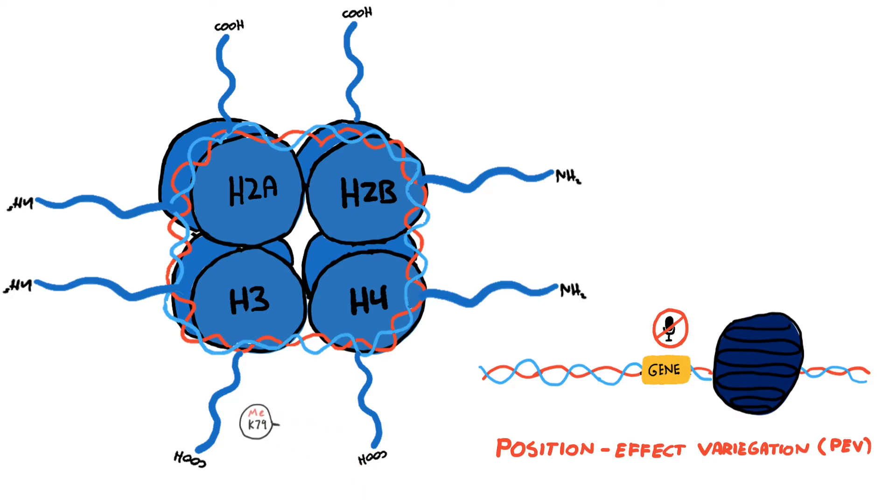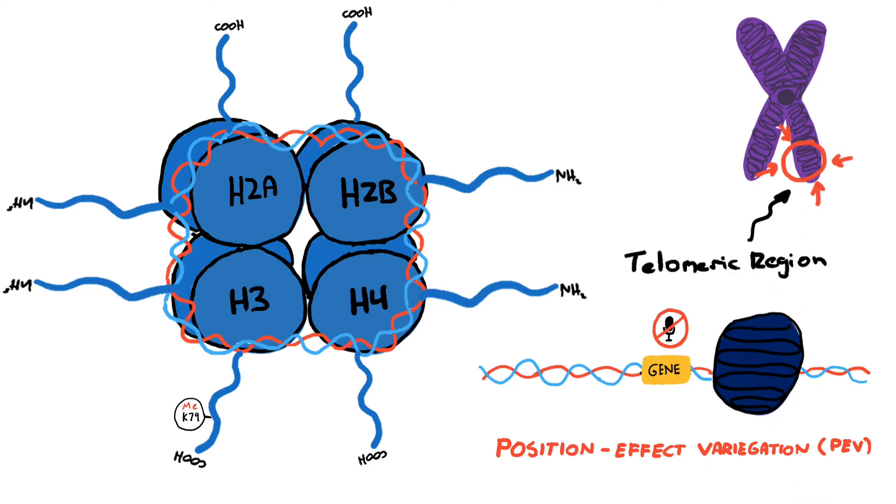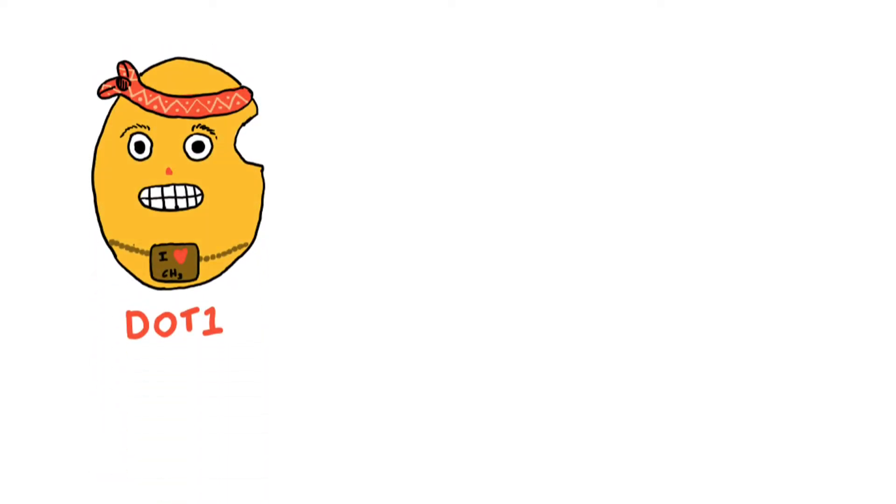The model consisted of using lysine-79 of histone-3 or H3K79 as a genetic marker for methylation at telomeric regions. H3K79 methylation is mediated by the enzyme DOT1, meaning disruptor of telomeric silencing one.